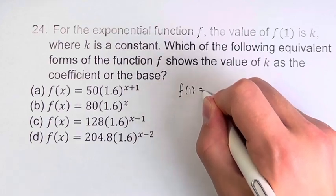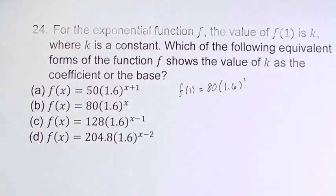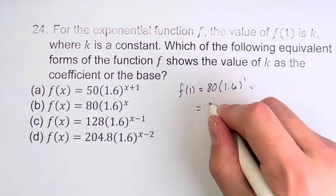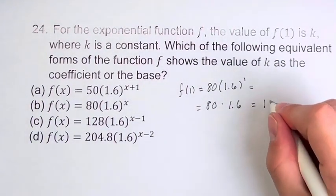f of 1 equals 80 times 1.6 to the 1. 1.6 to the 1 is just 1.6, so this is equal to 80 times 1.6. And if you do this out, this is equal to 128.